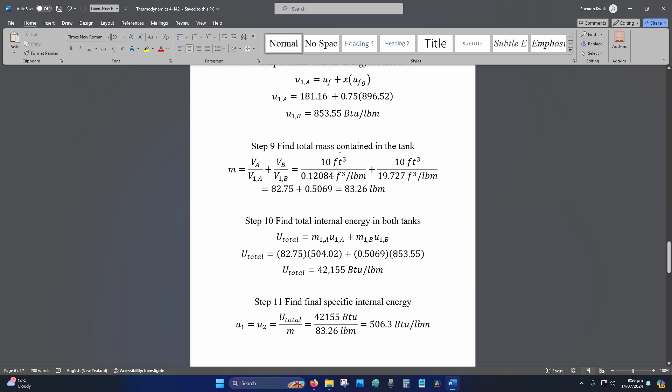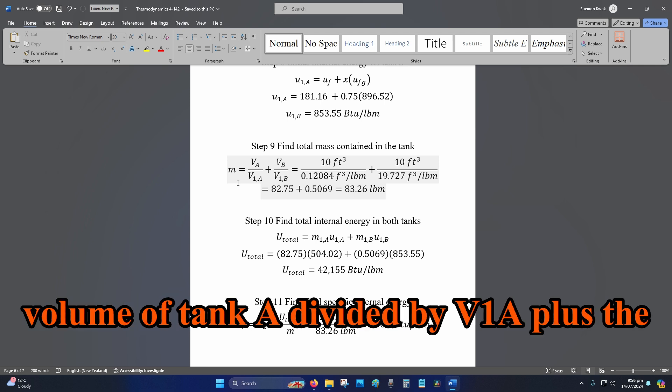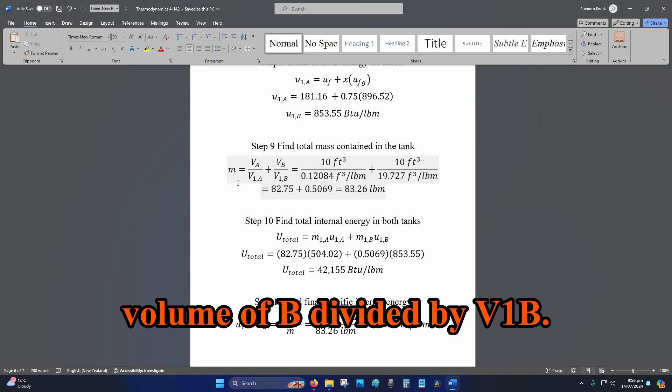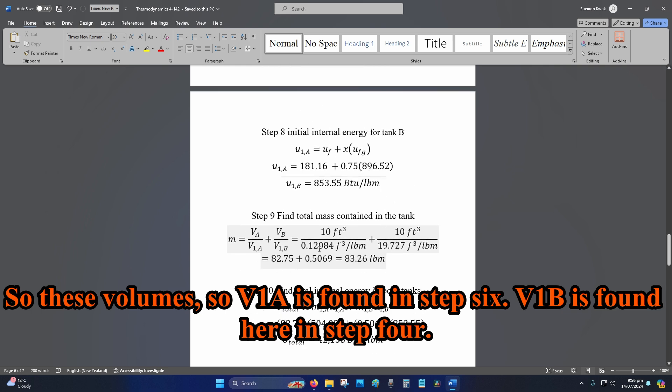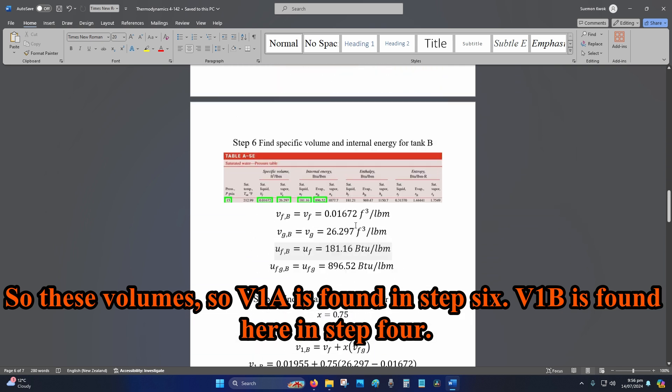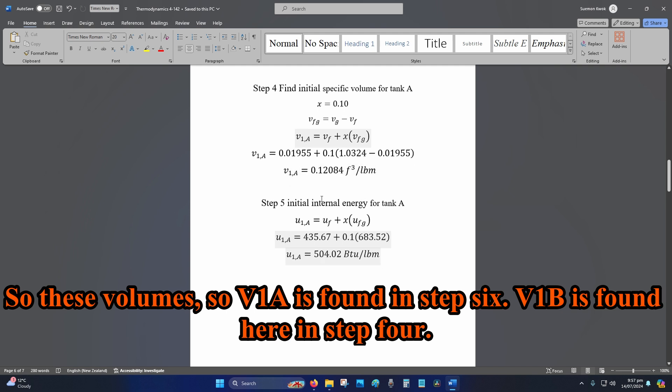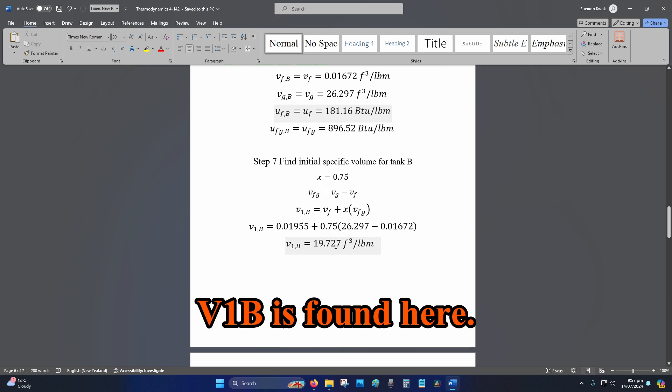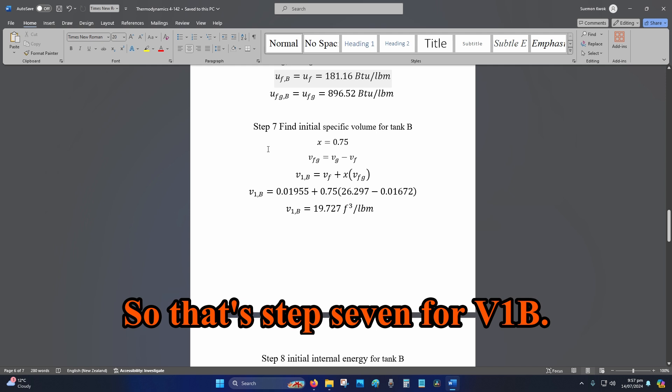Step 9, find the total mass contained in the tank. So, that is mass is equal to the actual volume of tank A divided by V1A plus the volume of B divided by V1B. So, these volumes. So, V1A is found here in step 4. V1B is found here. So, that's step 7 for V1B.